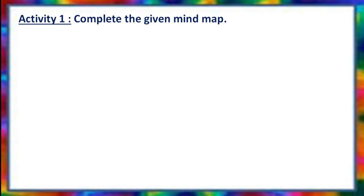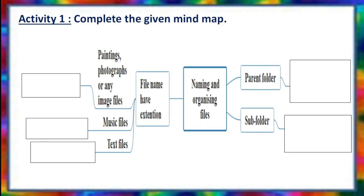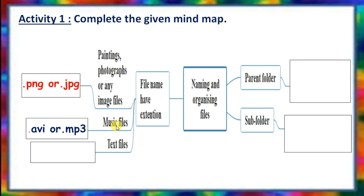Activity 1: Complete the given mind map. Children, here we have a mind map with 5 boxes. The first branch is paintings, photographs, or any image files — what is the extension name for these files? Yes, it is .png or .jpg. Similarly, music files extensions? Yes, .avi or .mp3. Text files? .txt or .doc.